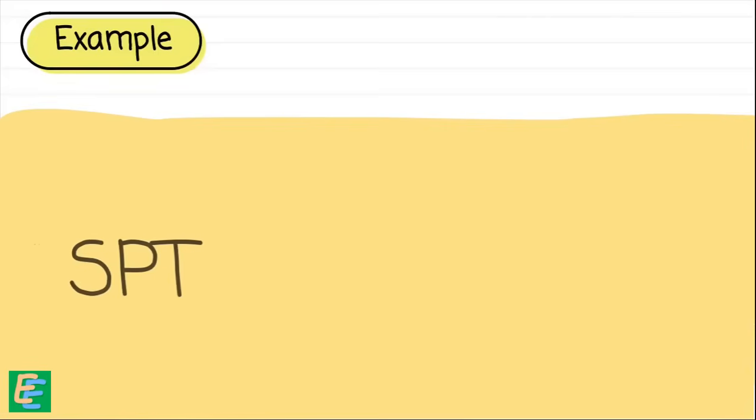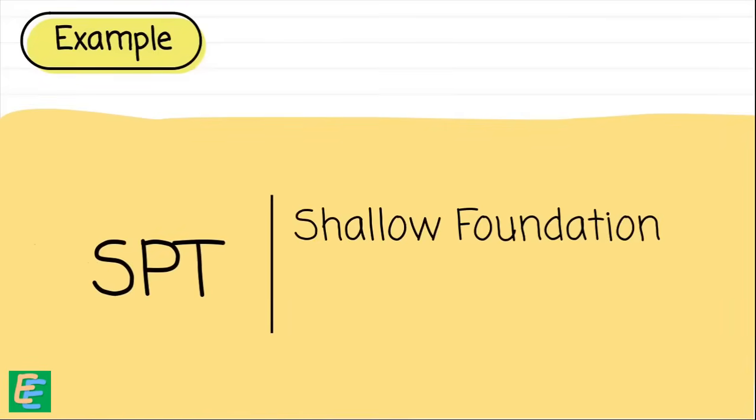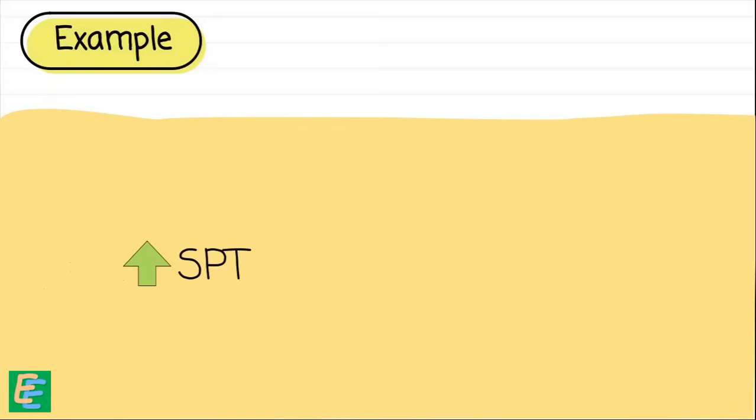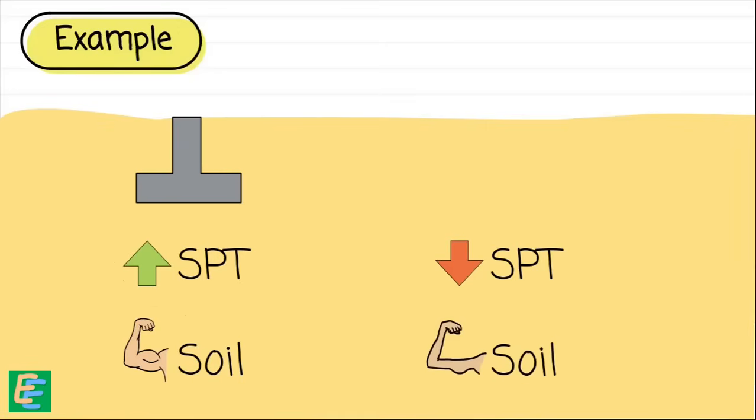Now that we have understood the process and the importance of SPT, let's take an example of how it is used in practical applications. Depending upon the N values, we may decide to go for either shallow foundations like footings or deep foundations like piles. If we get a higher SPT number, which indicates strong soil, a shallow foundation is sufficient. But when the SPT value is lower, the soil isn't strong enough to support the load and we need to go deeper with deep foundation to ensure the structure's stability.